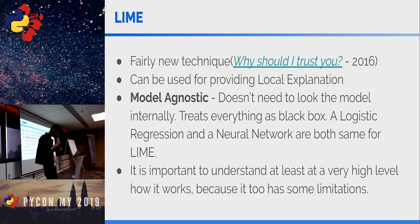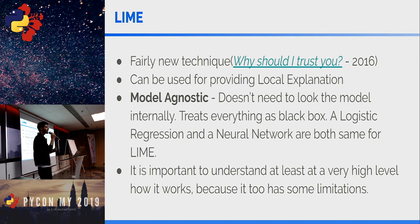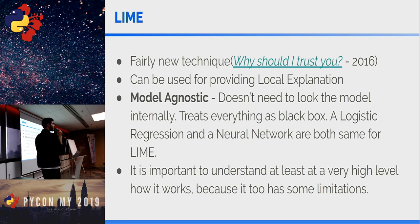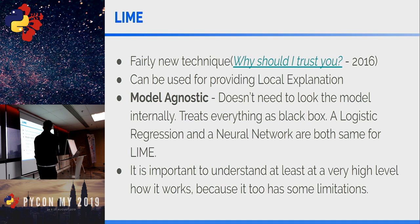LIME is a fairly new technique, introduced in 2016. The research paper is called 'Why Should I Trust You?' LIME can only be used for local explanations, not global ones. It is model-agnostic, meaning it doesn't need to look at the model internally — it treats everything as a black box. So a logistic regression model and a neural network are the same to LIME. It's important to understand at a high level how LIME works because it has some limitations and doesn't always perform well.